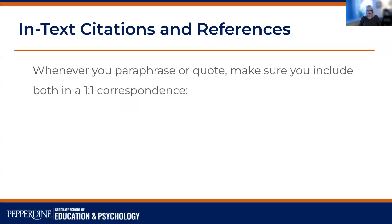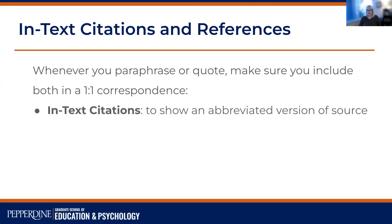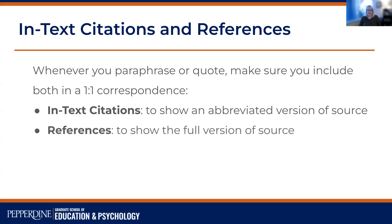Whenever you paraphrase or quote, make sure that you include a one-to-one correspondence between your in-text citations, where you show the abbreviated version of a source — usually just the author's last name and the year — and then in your references, you show the full version of the source listed out. You must have this one-to-one correspondence where all citations used in your text appear as full references on your reference page, and vice versa.